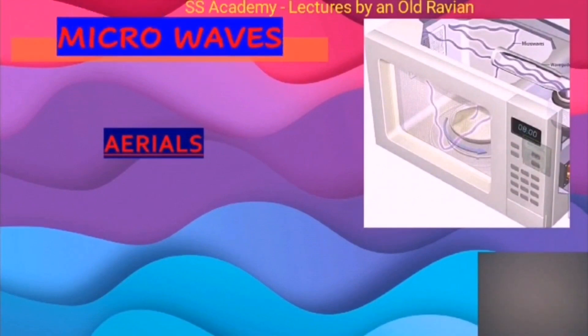Now, microwaves. Microwaves are produced by aerials and they are detected by dishes or satellites. Their uses are in mobile phones, TV, satellite communications, and telephone.